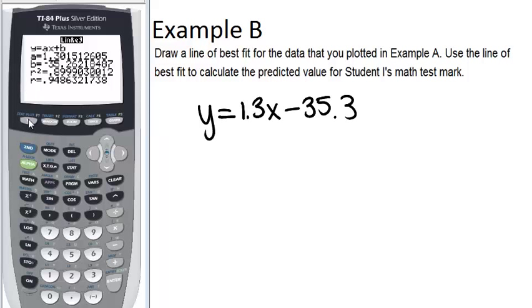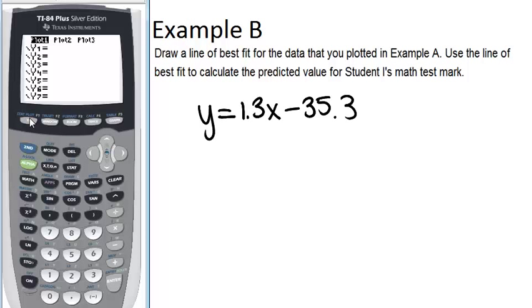Now I can enter in that equation, click Y equals, and type in my equation 1.3X minus 35.3, enter, and click graph. And I should see both the scatter plot and now also the line of best fit.